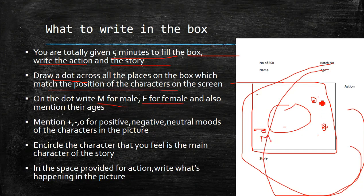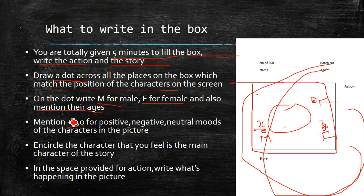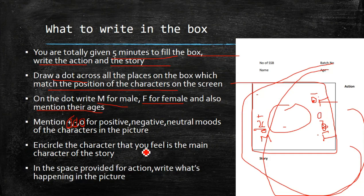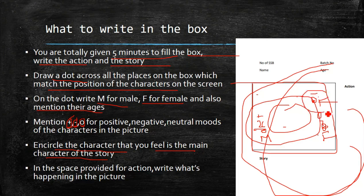Write M for male and F for female next to each dot. Also mention their ages — by seeing the picture you can guess the age, whether it's around 25, 30, or 50. Then mention plus, minus, or O: plus is for positive mood, minus is for negative mood, and O is for neutral. Finally, encircle the character you feel is the main character — the hero of your story.